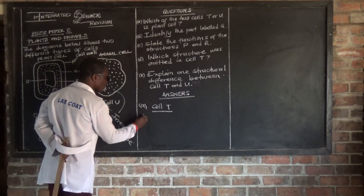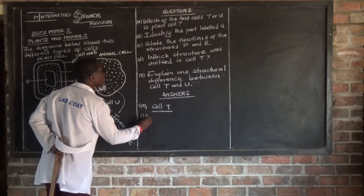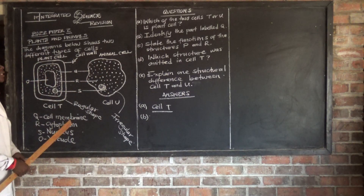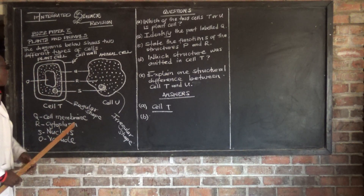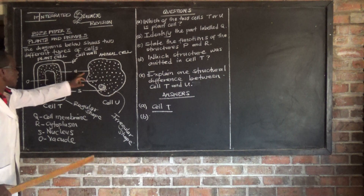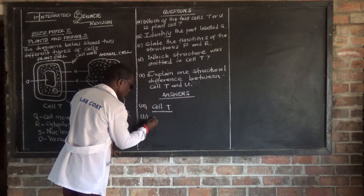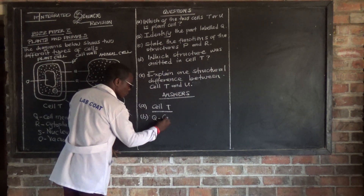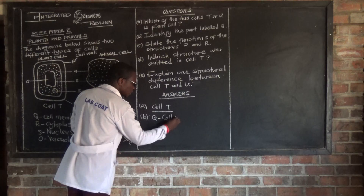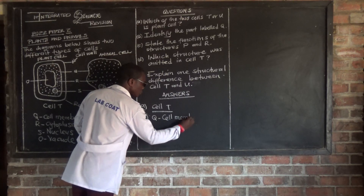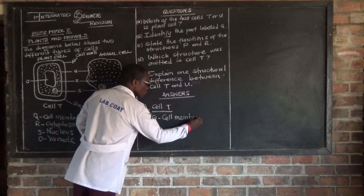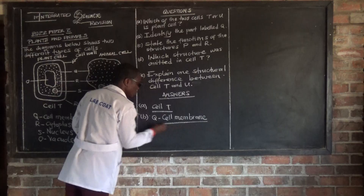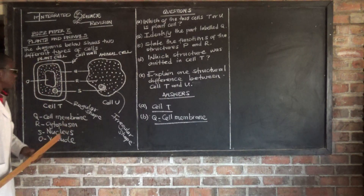Question B says: identify the part labeled Q. Q is our cell membrane.